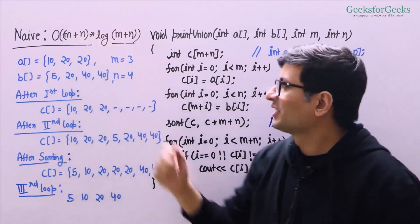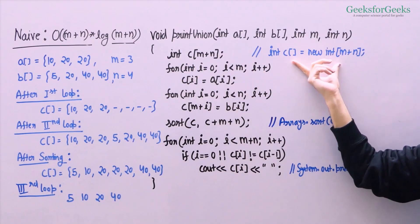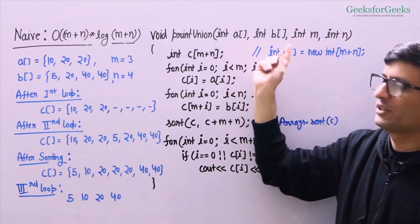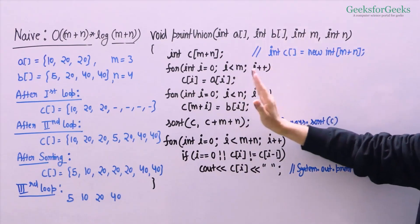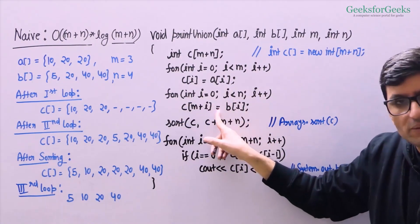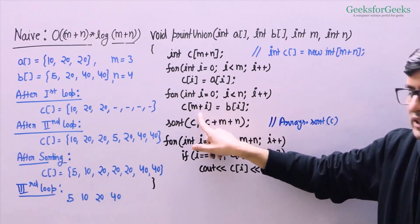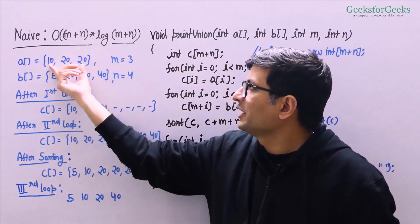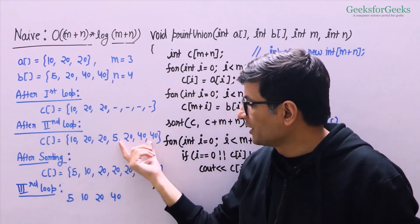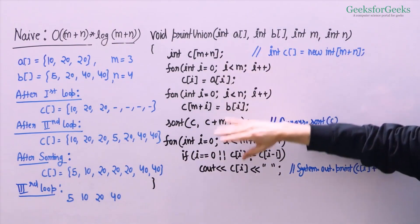What we do first is create an array c of size m plus n. In Java you can create an array this way, and you won't need to pass lengths as separate parameters — you can get m as a.length and n as b.length. After creating the array, we copy the elements of array a into array c, then copy the elements of array b starting from index m. So c has all elements of array a followed by all elements of array b. After copying, we sort the array c.